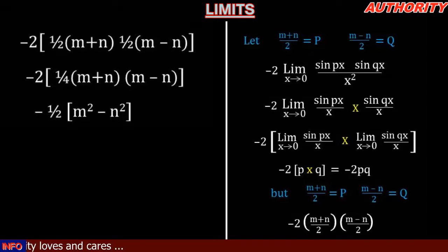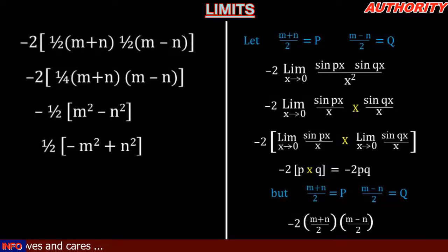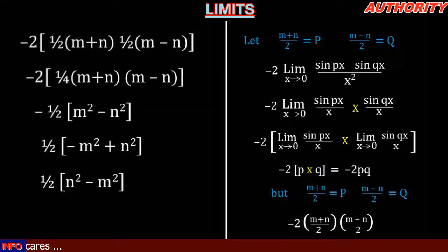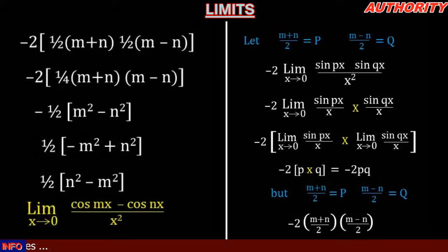So we have minus one-half times (m squared minus n squared). When we distribute the minus sign into the bracket, minus one times m squared gives minus m squared, and minus one times minus n squared gives plus n squared. Rearranging the bracket gives us one-half times (n squared minus m squared). Therefore, the limit as x approaches zero of (cos(mx) minus cos(nx)) all over x squared equals (n² minus m²) all over 2.